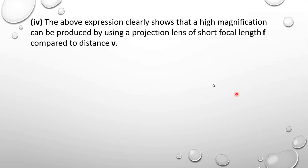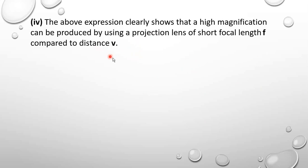So if F is small compared to V, then M is going to be bigger. For us to get a higher magnification, the focal length must be shorter compared to the distance V.